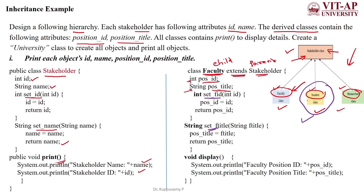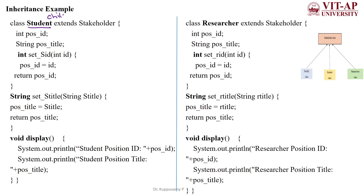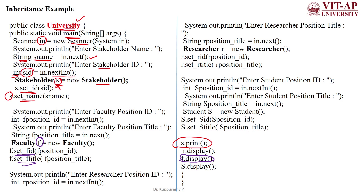The second derived class is Student, also a child of the Stakeholder parent. It has the same two variables: position_id and position_title. We assign values using set_s_id and set_s_title methods. In the driver class, an integer variable for student position id and a String variable for student position title are used to get input. Then object s is created for the Student class.